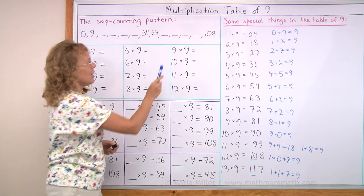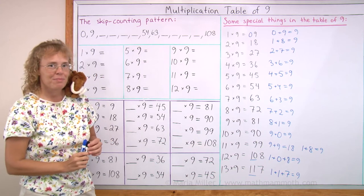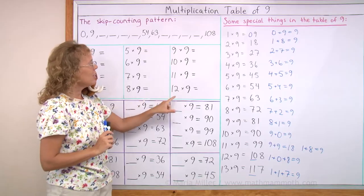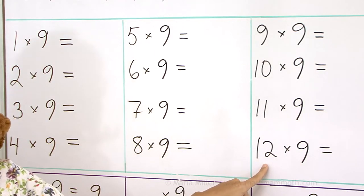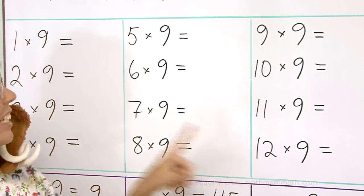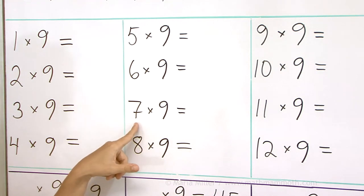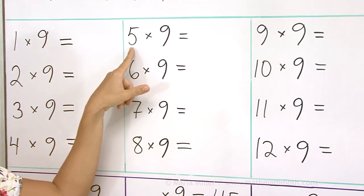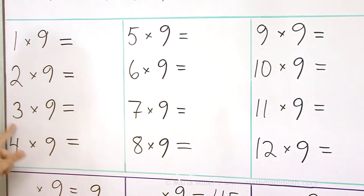You ready? 9 times 9? 81. 11 times 9? Oh, that's easy. 99. 12 times 9? 108. 7 times 9? 63. 5 times 9? 45. 3 times 9? 27. 8 times 9? 72.